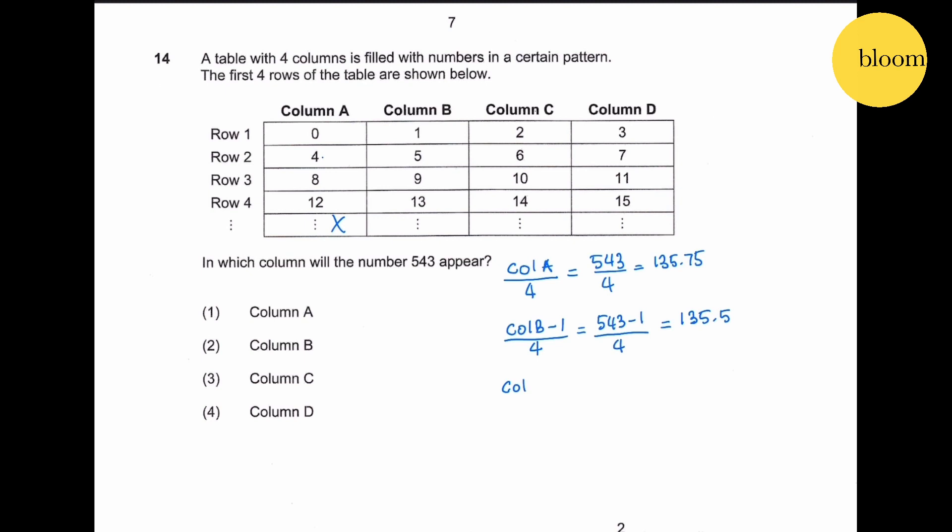Column C on the other hand has to be minus 2 before it can be divided by 4. So 543 minus 2 divided by 4 gives us 135.25. Therefore column B and column C cannot be. Column D on the other hand is minus 3 before divided by 4. So 543 minus 3 divided by 4 gives us 135. Good. So the answer is 4.